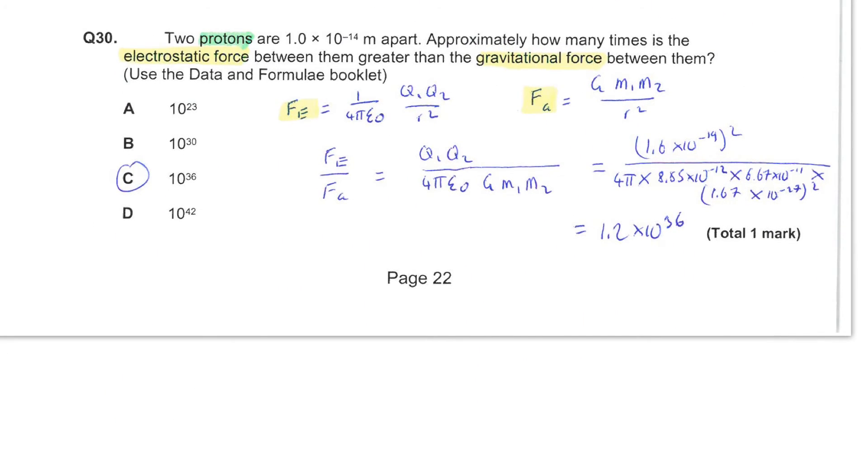Next we consider two protons and we know their separation is 1 times 10 to the minus 14 meters. You are asked to find how many times the electrostatic force is greater than the gravitational force. So using the formula booklet as suggested, you can look up the equation for the electrostatic force and the equation for the gravitational force.